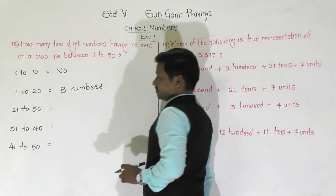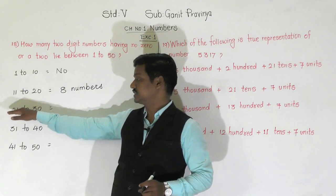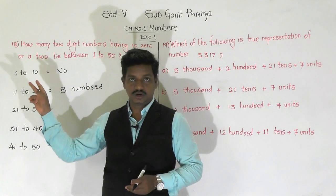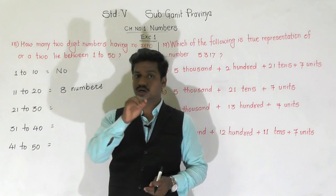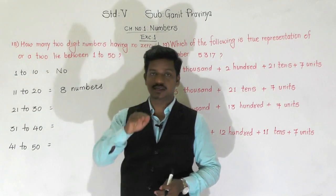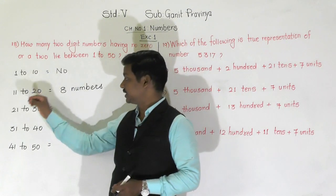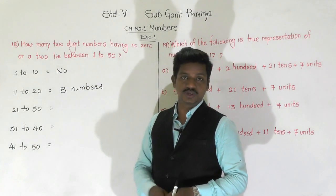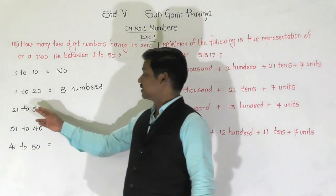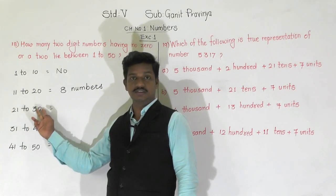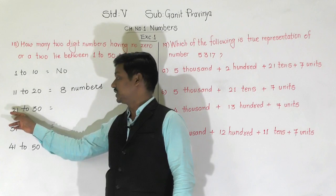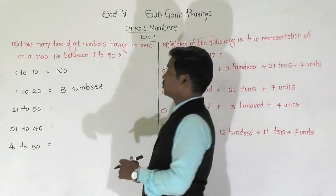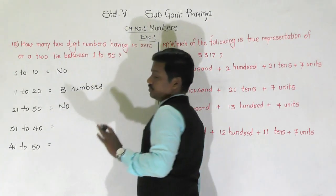Between 21 to 30, all numbers from 21 to 29 have 2 in them, so they will not be counted. And 30 is also having 0. So in the range 21 to 30, we are not getting any number which does not have 0 or 2 — 0 numbers here.